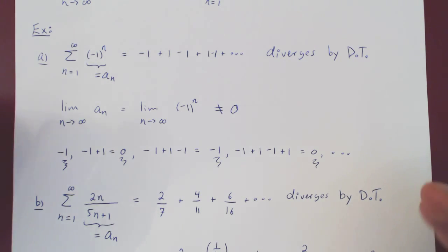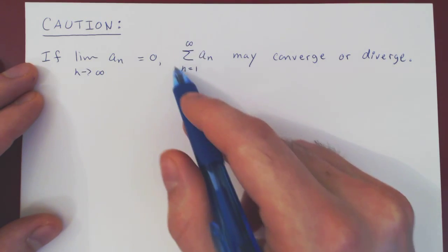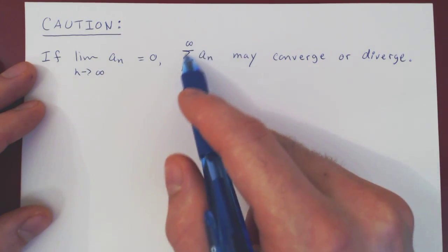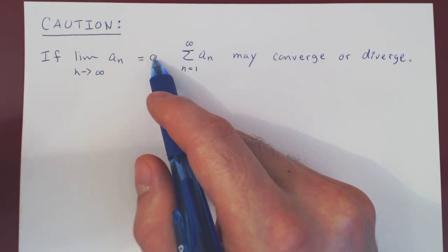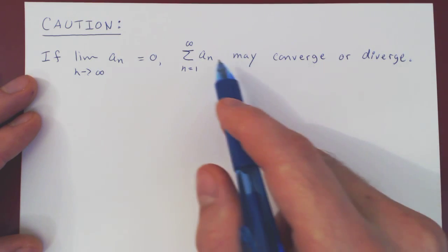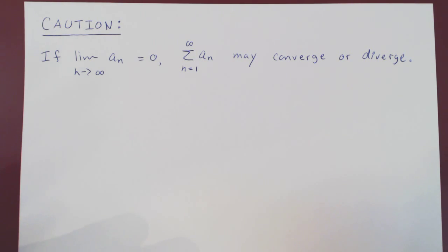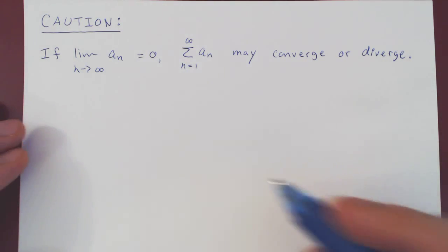Now I'm going to leave you with a word of caution. If a sequence does converge to 0, then the corresponding series may converge or diverge. The fact that you are summing terms that approach 0 in the limit does not allow you to conclude anything — the series may converge in some cases and diverge in others. Let's look at two examples of this, which we've seen in the past.